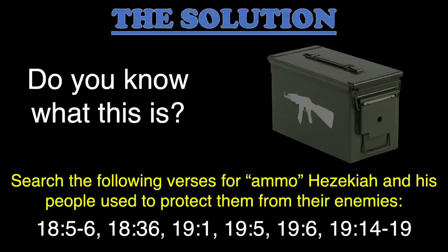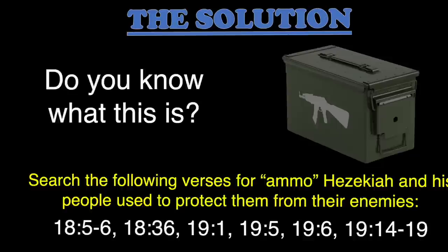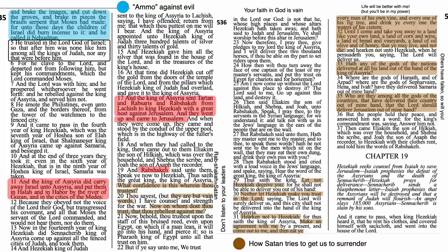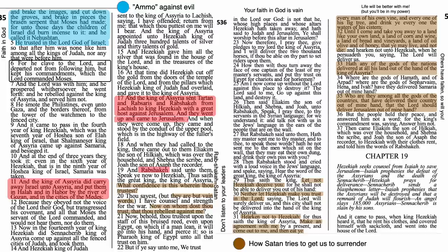Hezekiah and his people had some ammo of their own — things that helped them stand strong in the face of the overwhelming power of the Assyrian army. I'm going to give you a number of verses to study and I want you to look for the things Hezekiah or his people did to fight back against the Assyrians. In 18:5 — he trusted in the Lord God of Israel. Faith was a part of his ammo. I'll pull a little plant out of my box — one of my favorite symbols for faith. Faith is like a little seed that, if nourished, will grow into a beautiful and fruitful tree of testimony. Faith is a powerful weapon against evil.